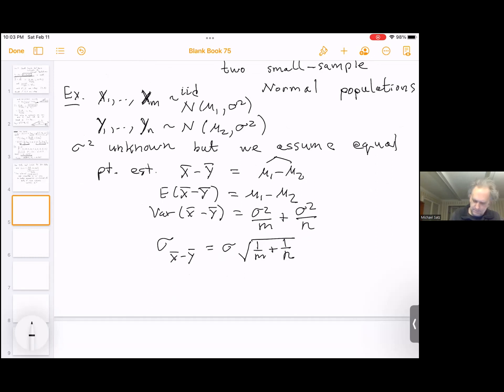Also, since x bar minus y bar is normal, then we have z for our random variable. This is exactly the same as before so far is x bar minus y bar minus mu1 minus mu2, and then divide by this sigma times square root 1 over m plus 1 over n, and this will be normal 0, 1 from our assumptions.